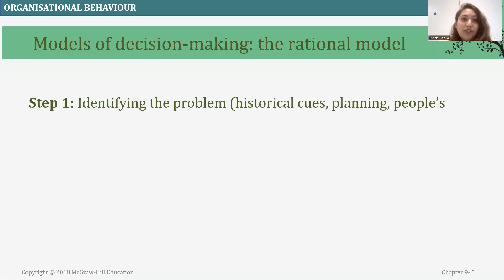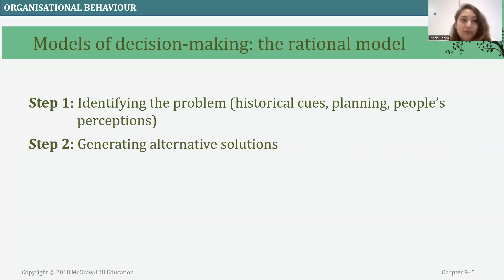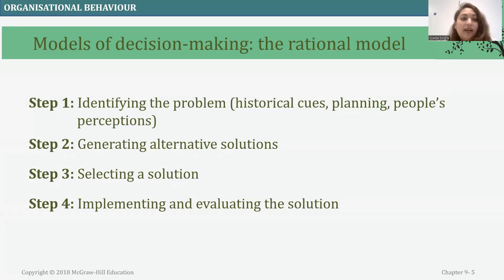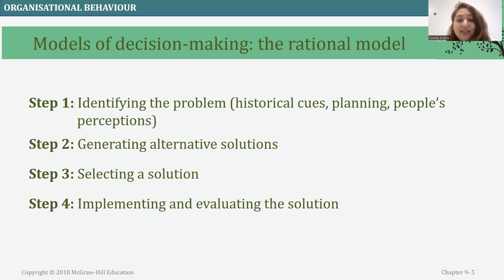Looking at the model of decision making, the rational model includes four stages. Step one is identifying the problem. Step two is generating alternative solutions to the problem. Step three is selecting a particular solution. And step four is implementation and evaluation of the solution.